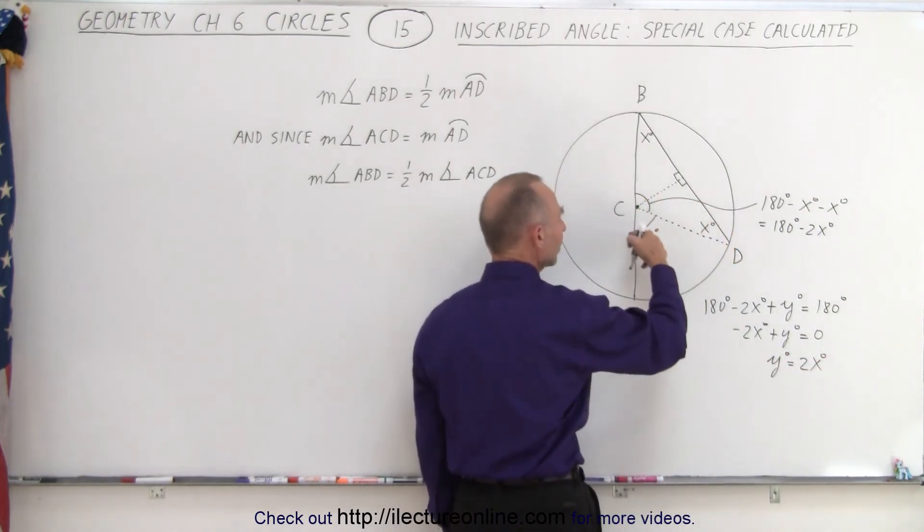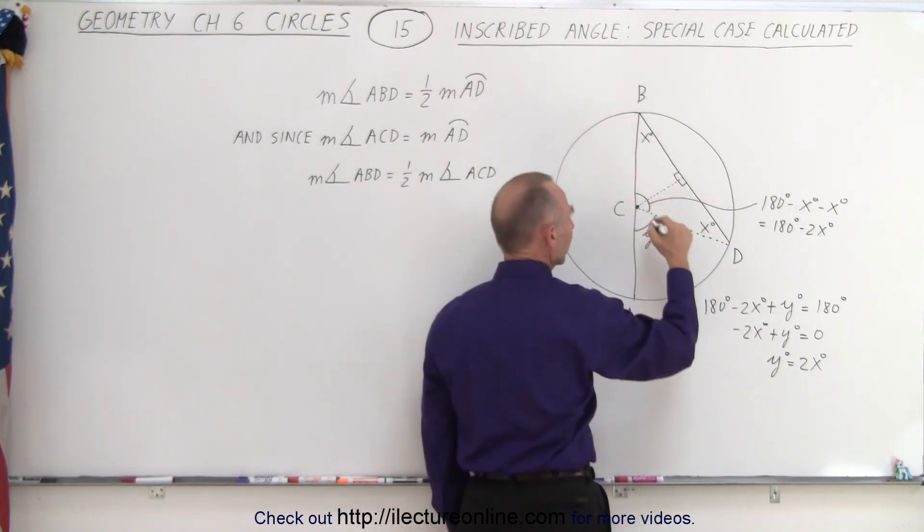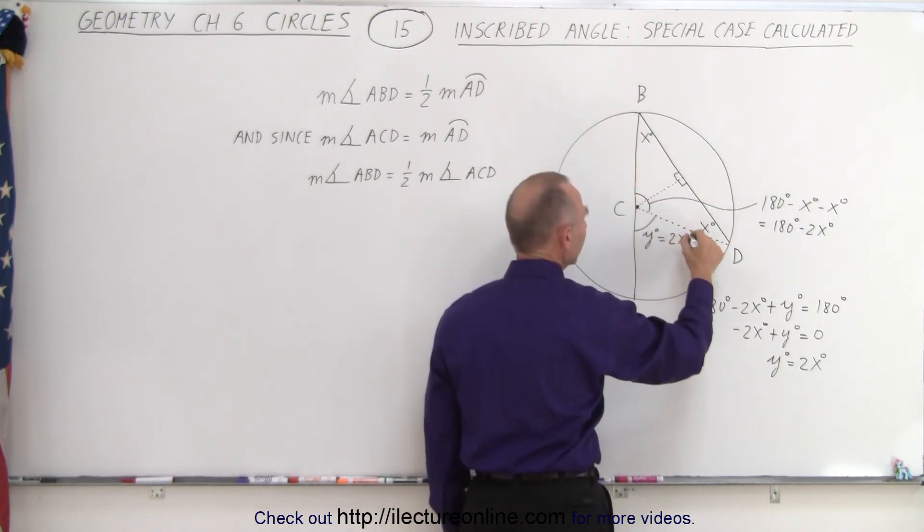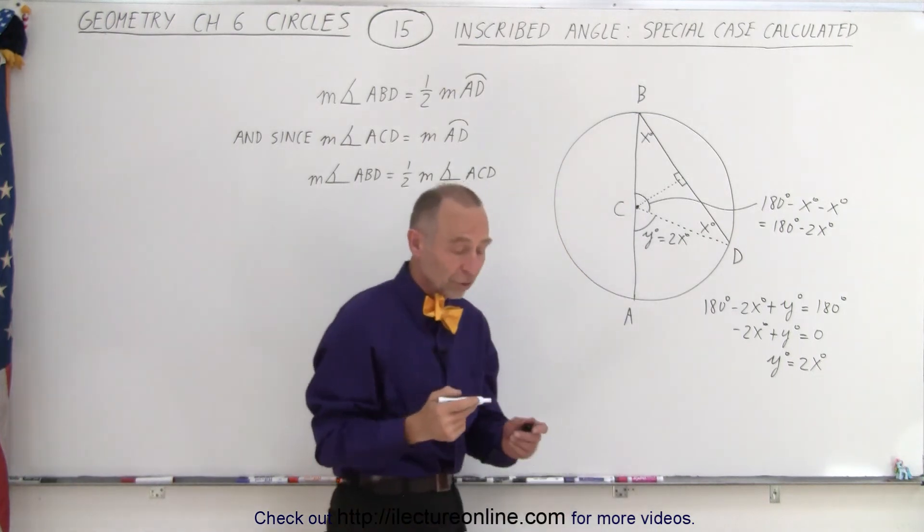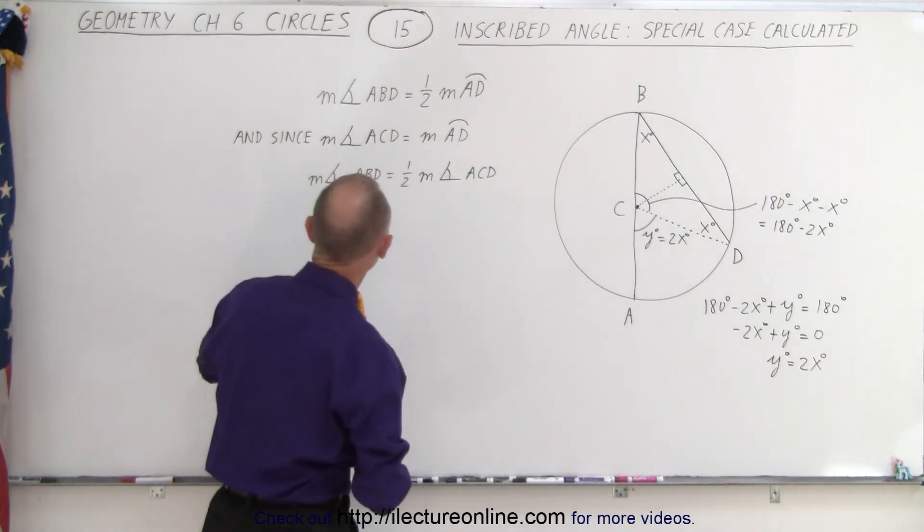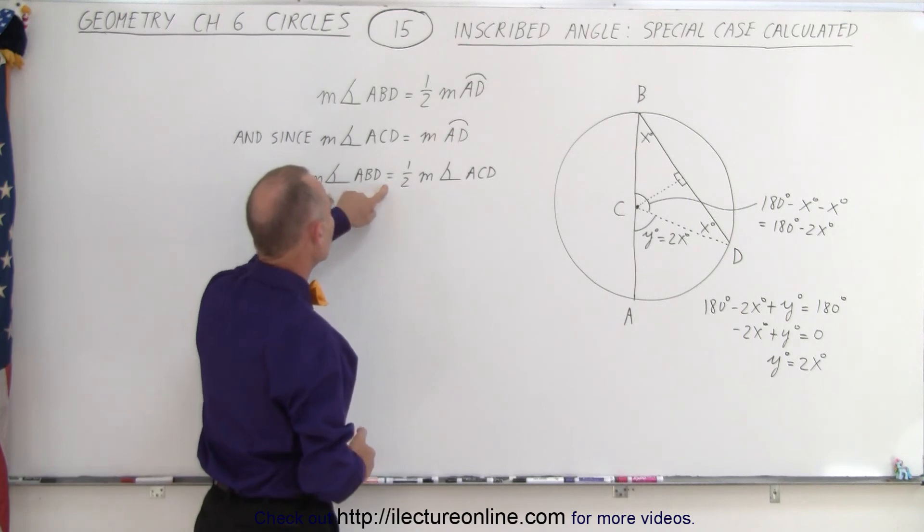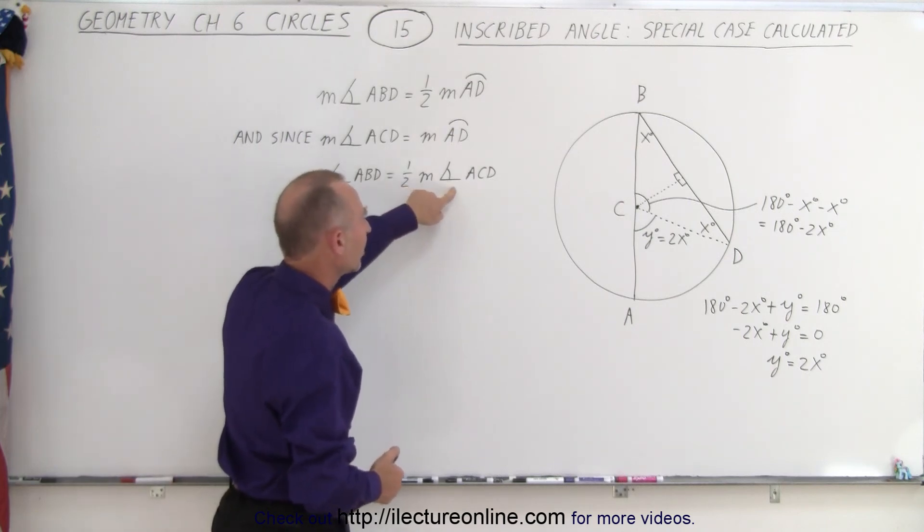In other words this angle here is twice the angle of this angle so this is equal to 2x degrees and that's exactly what we're trying to show because here we said that the measure of angle ABD must be equal to half the measure of angle ACD.